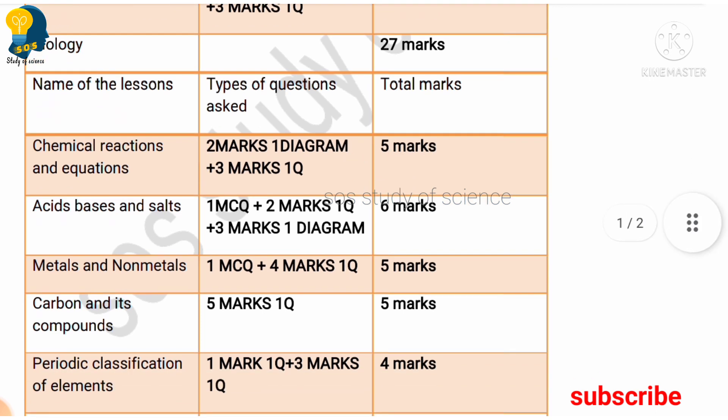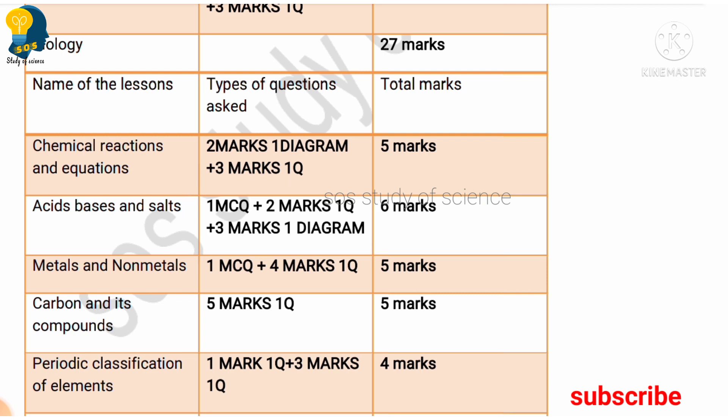Moving to Acids, Bases and Salts — they have allotted six marks, out of which there is one MCQ, one two-mark question, and one three-mark diagram question. So six marks is allotted for Acids, Bases and Salts.